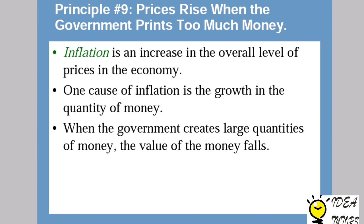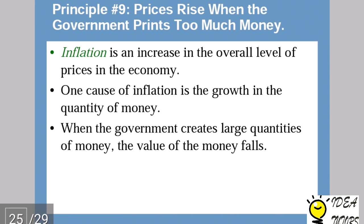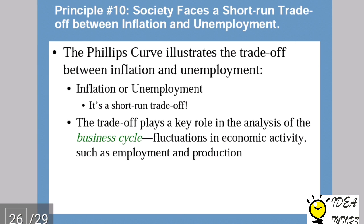The tenth principle is: society faces a short-run trade-off between inflation and unemployment. The concept of the Phillips curve illustrates this trade-off between inflation and unemployment. This short-run trade-off plays a key role in the analysis of business cycle fluctuations in the economy.